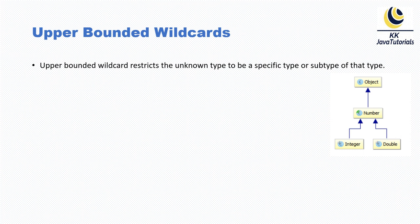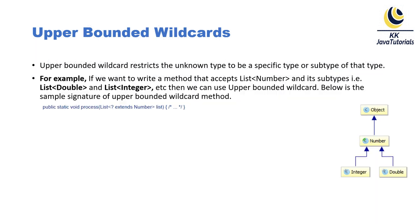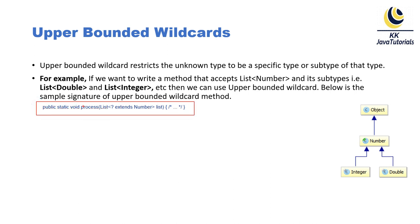First, we'll talk about upper bounded wildcards in Java. The upper bounded wildcard restricts the unknown type to be a specific type or a subtype of that type. For example, if you want to write a method that accepts a list of Number and its subtypes — like List of Double, List of Integer, List of Byte, List of Short, etc. — then you can use an upper bounded wildcard.